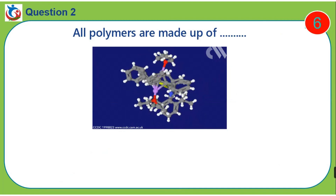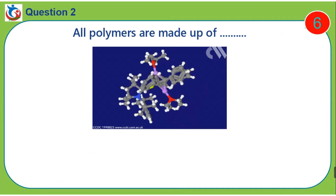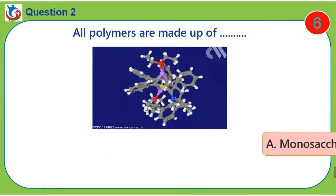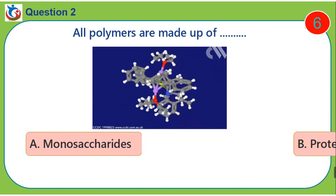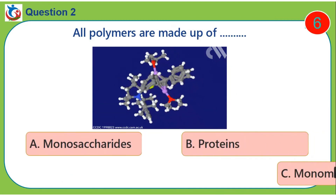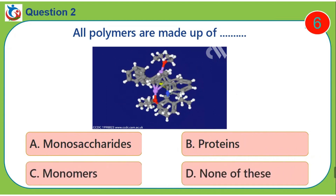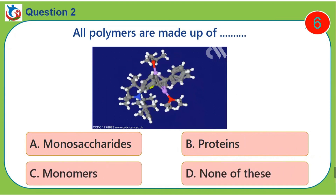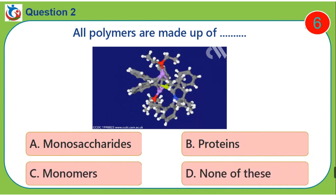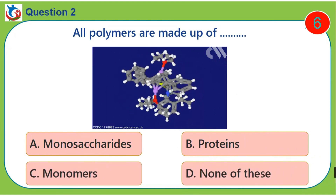Question 2. All polymers are made up of dash. A. Monosaccharides. B. Proteins. C. Monomers. D. None of these.